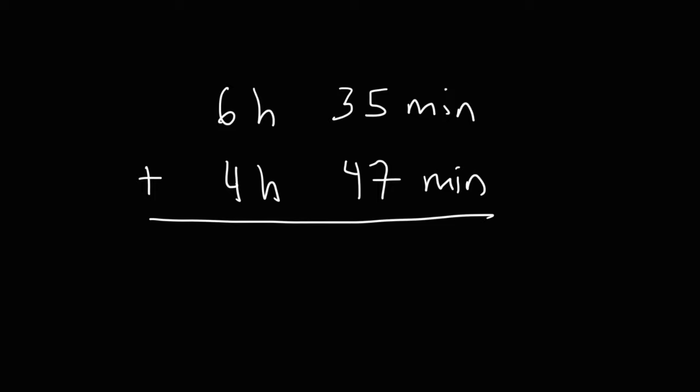Now let's try another one. Let's say we wish to add 6 hours, 35 minutes, and 4 hours and 47 minutes. Feel free to try this one if you want to. So let's begin by adding these two numbers first. 5 plus 7 is 12. So we need to write the 2, carry over the 1.